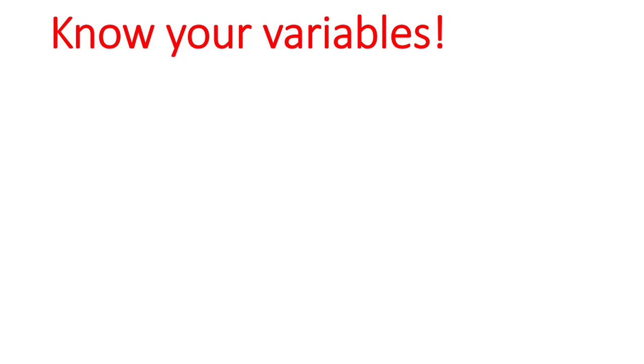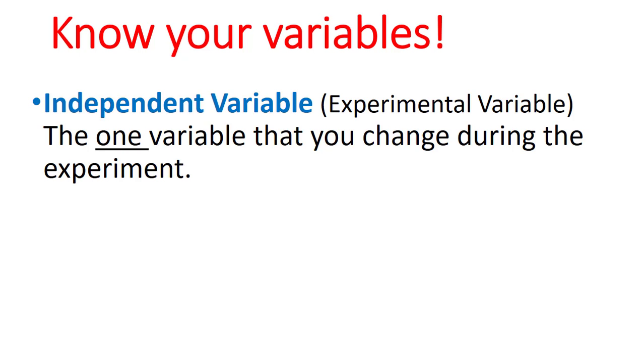The first step is to know our variables. Firstly, our independent variable, sometimes known as our experimental variable, is the one thing that we can change during our experiment. And that's what makes it a fair test, the fact that we're only changing one thing.